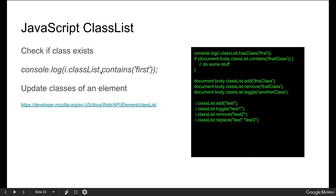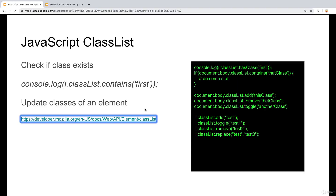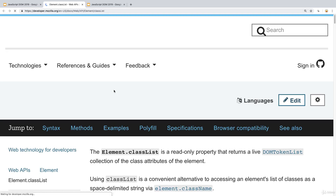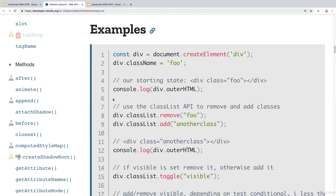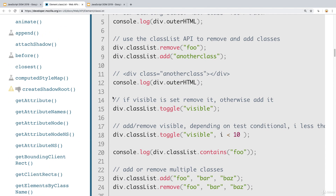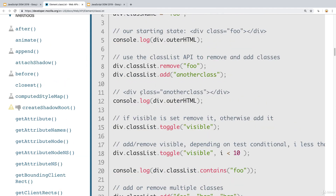Within the classList, we have the ability to check using 'contains'. If the class is available, it will return a Boolean value of true. This gives us the ability to check if classes exist.